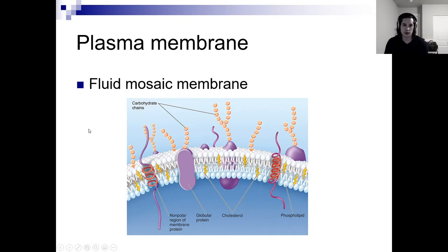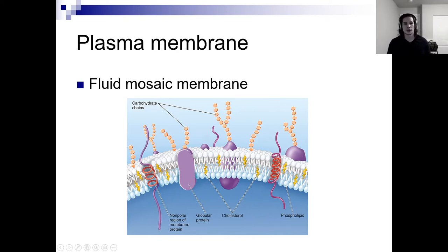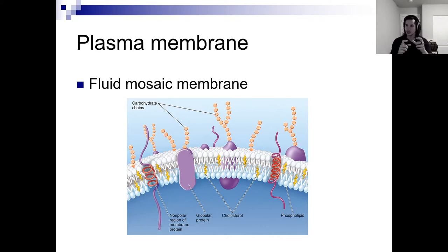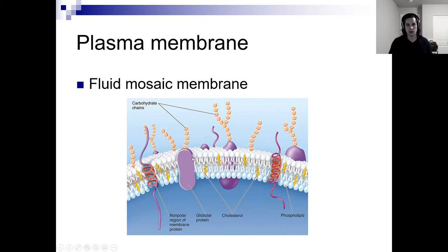Plasma membranes. We usually call this a fluid mosaic, using the fluid mosaic model to describe it. It's fluid because it's constantly in motion — phospholipids are always traveling around, not static, exchanging with other phospholipids; proteins are moving along within the cell membrane. So it's fluid — constantly in motion.